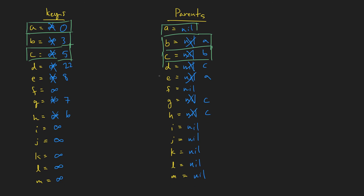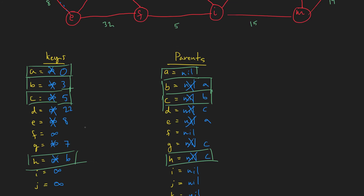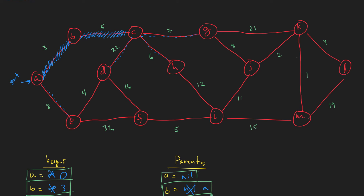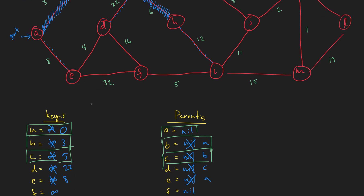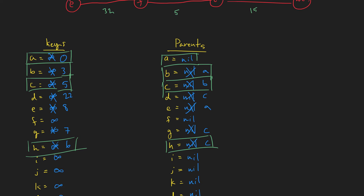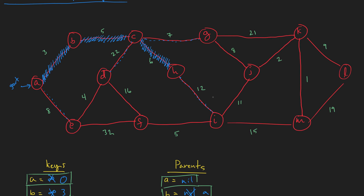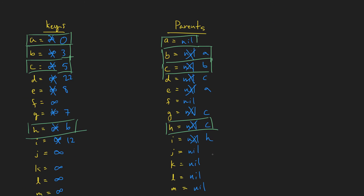We add the edge between H and C to our tree. H was the last one added, so let's look at its adjacency list. It's connected to I, so we update I's key to 12 with parent H. There's nothing left to update. Let's go back through our keys and find the smallest one to add to our tree. The smallest is G, so G gets added next.